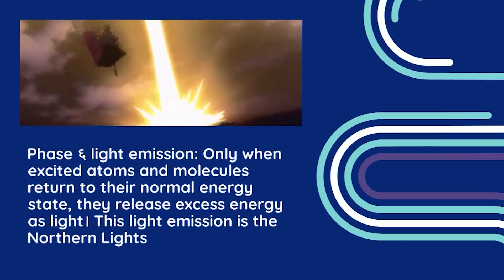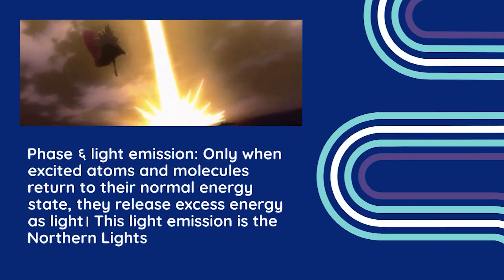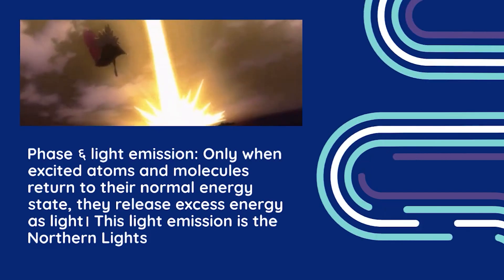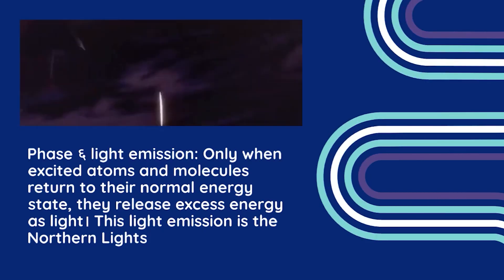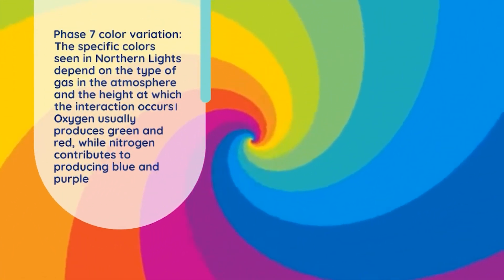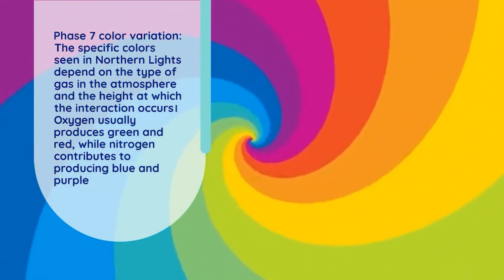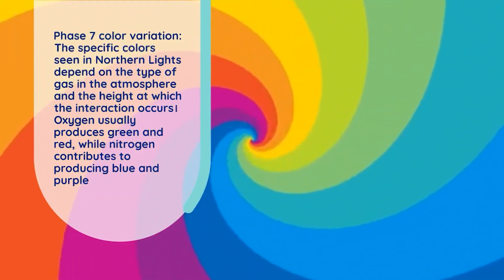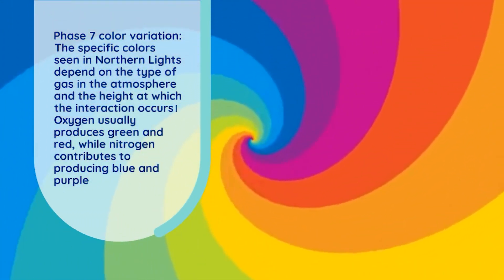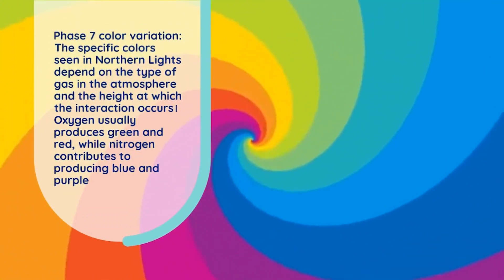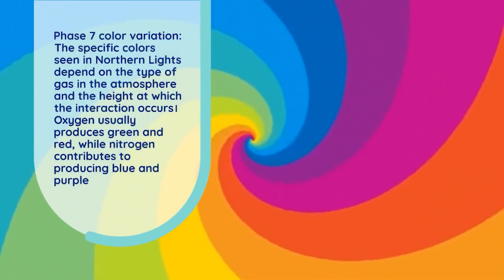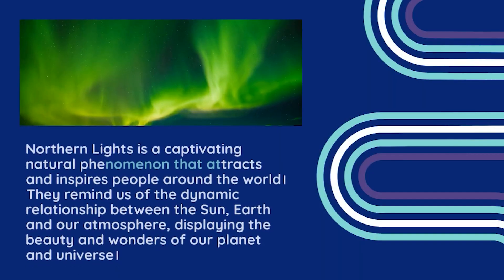Phase 6 is Light Emission. When excited atoms and molecules return to their normal energy state, they release excess energy as light. This light emission is the Northern Lights. The specific colors depend on the type of gas and the height at which the interaction occurs. Oxygen usually produces green and red, while nitrogen contributes to blue and purple.